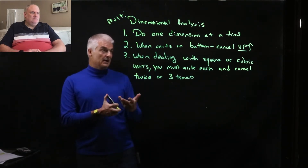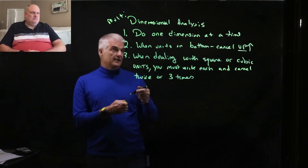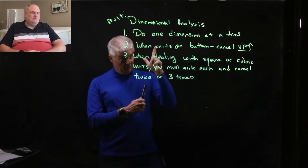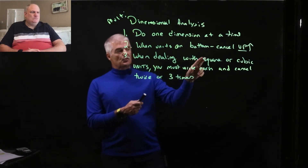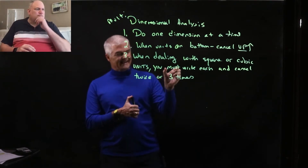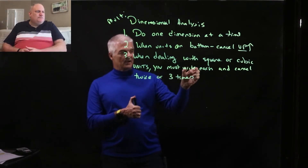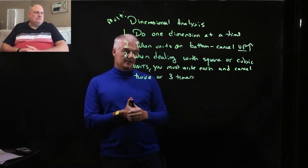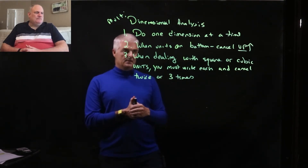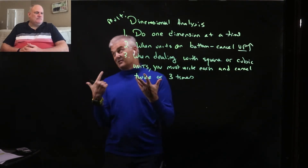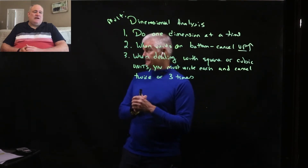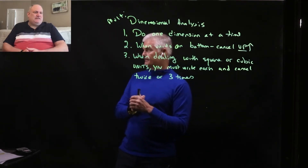Number one: do one dimension at a time. Number two: when units are on the bottom, cancel up. And when dealing with square or cubic units, you must write each one out and cancel twice or three times — square: twice, cubic: three times. The only way to learn this is to do examples.